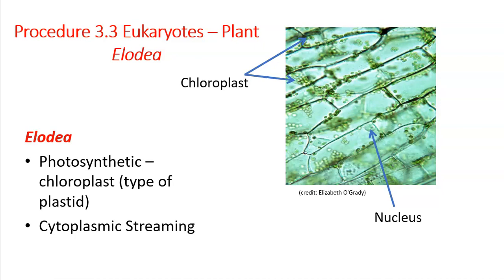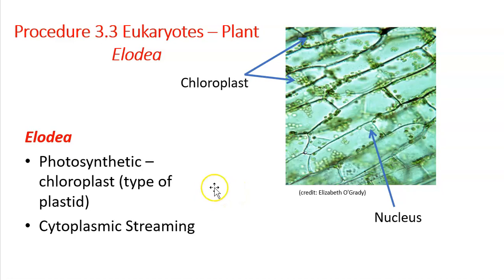The rest of the cells you're going to observe throughout the lab are eukaryotic cells. The first eukaryotic cell you're going to look at is a plant eukaryotic cell. This is Elodea, sometimes pronounced Elodea. Elodea are plant cells. They're larger than the prokaryotic cells that we just observed, and we can definitely see some membrane-bound organelles.